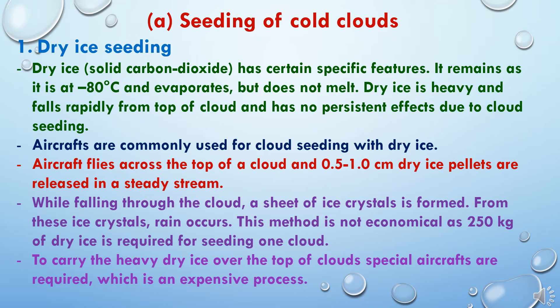The first method is seeding of cold clouds — specifically, dry ice seeding. Solid carbon dioxide has certain specific features: it remains stable at minus 80 degrees centigrade and evaporates but does not melt. Dry ice is heavy and falls rapidly from the top of clouds, and has no persistent effects due to cloud seeding. Aircraft fly across the top of a cloud and release 0.5 to 1 cm dry ice pellets in a steady stream. While falling through the cloud, a layer of ice crystals is formed, from which rain occurs. This method is not economical, as 250 kg of dry ice is required for seeding one cloud, and specially equipped aircraft are required to carry the heavy dry ice, making it an expensive process.